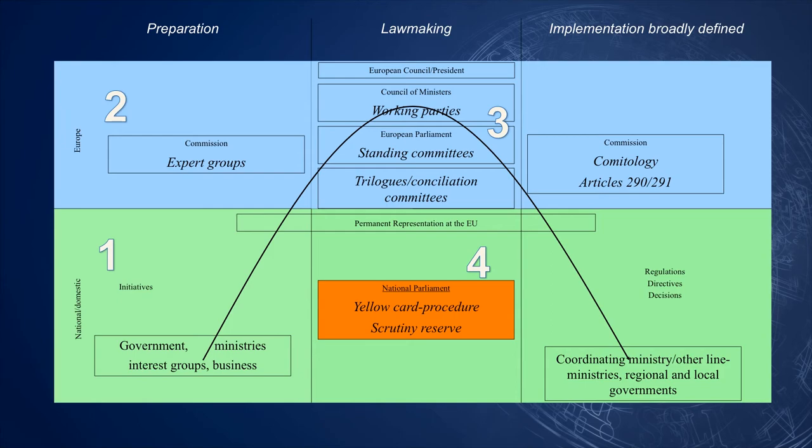Once a proposal is adopted, it moves back to the member states for implementation. Sometimes a law requires additional regulation. In that case, the Commission is allowed to detail some elements as part of a delegated act. Another possibility the Commission has is to coordinate smooth implementation, for which it may adopt an implementing act. In both instances, the Commission is overseen by the member states and Parliament, although in different ways.